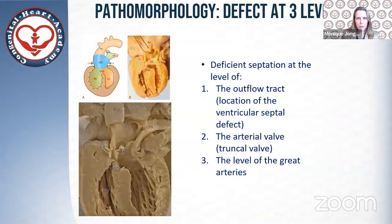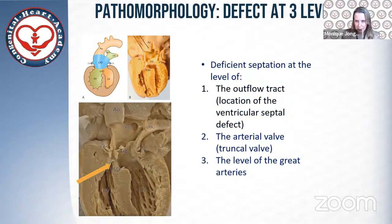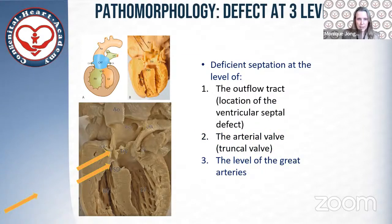From a morphological viewpoint of common arterial trunk, there is a defect at three levels. We'll have deficient septation at the level of the outflow tract, resulting in the presence of a sub-arterial VSD; at the level of the arterial valve, resulting in a single truncal valve; and also at the level of the great arteries, which results in an unseparated proximal part of the aorta and the pulmonary trunk.